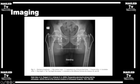On the acetabular side, offset depends on where you medialize your cup. If you decrease their offset, you do a couple of things that are negatives: you decrease their abductor lever arm, which functionally weakens their abductors, and you also increase the likelihood of dislocation.